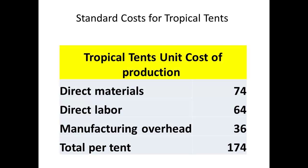For example, Tropical Tents produce a tent for use in tropical conditions. They have costs per tent for direct materials of $74, direct labour $64, and manufacturing overhead of $36. The standard costs per tent are therefore $174.